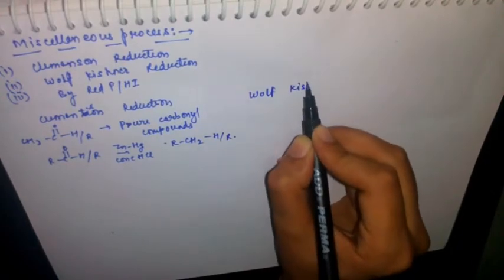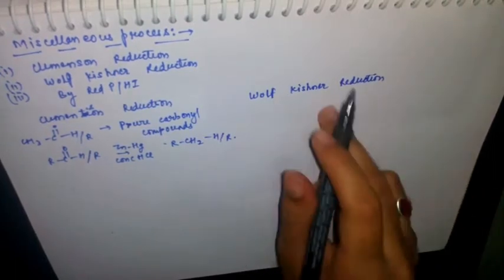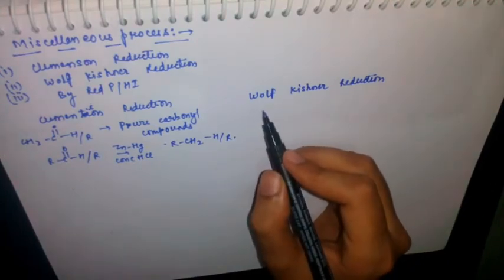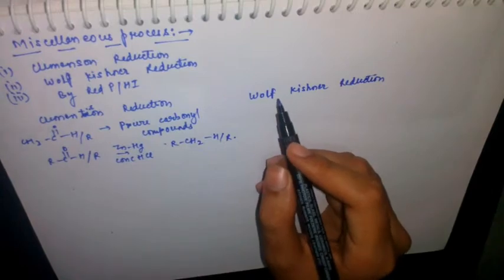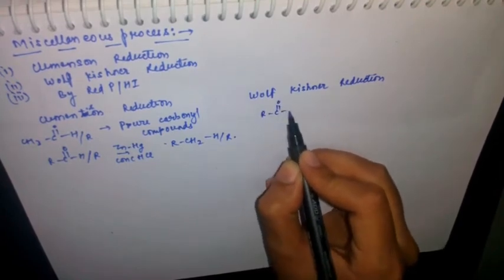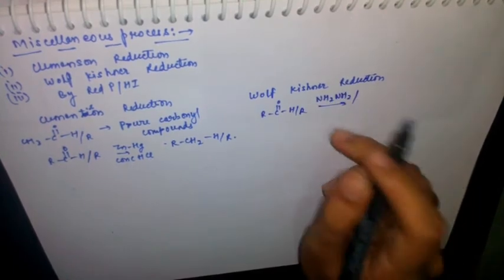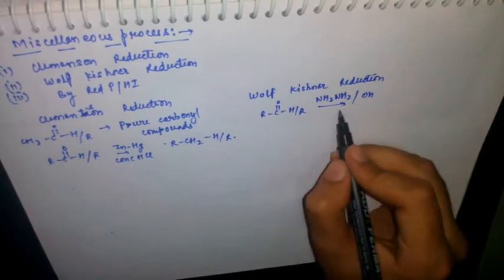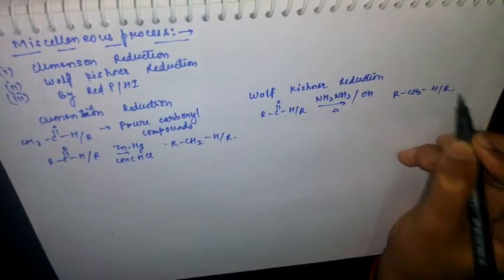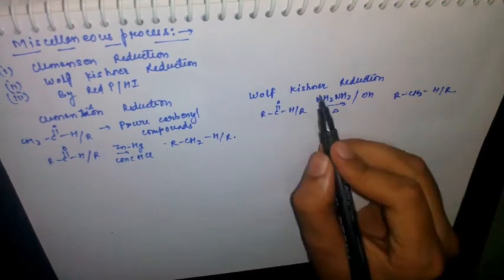In Wolff-Kishner reduction, pure carbonyl compounds on reaction with hydrazine (H₂N-NH₂) in the presence of a base, when heated, give the corresponding alkane. Please remember that the reagent for Wolff-Kishner reduction is hydrazine plus base.